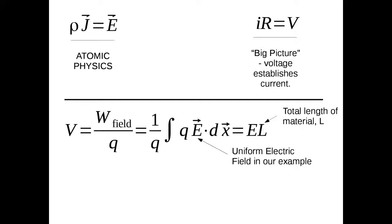Rho summarizes atomic physics — what's going on with collisions down inside the material — while R summarizes the net effect of all those collisions on the relationship between the voltage applied to a wire and the current driven through it. Voltage is equal to work done by an applied force per unit charge. For a uniform electric field over length L, that integral gives us simply E times L. So voltage equals E times L — a nice simple equation.